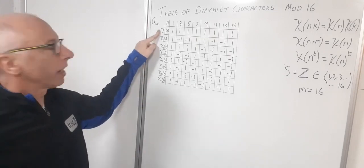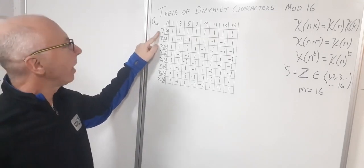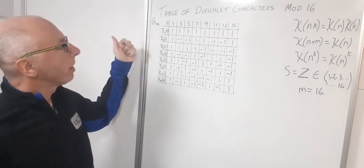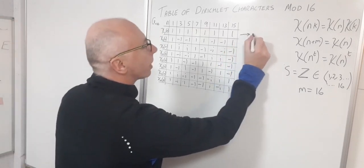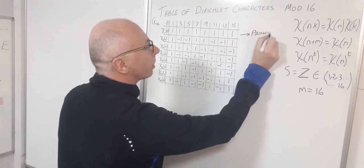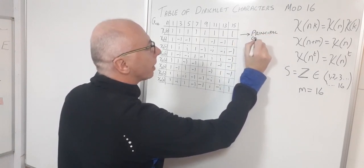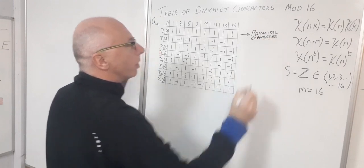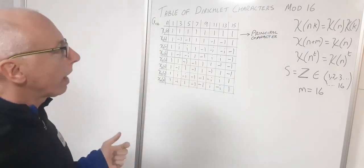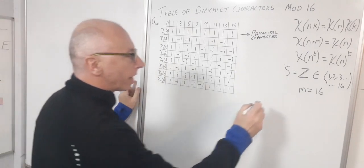Now this first one here, chi of n where this is number one, this one here is what's called the principal character. I'm going to write this one down as the principal character.